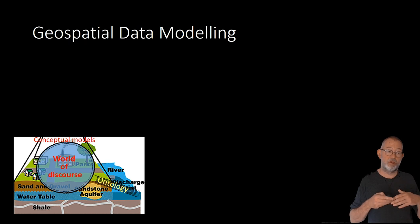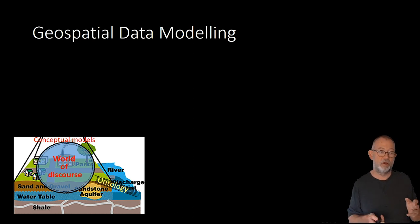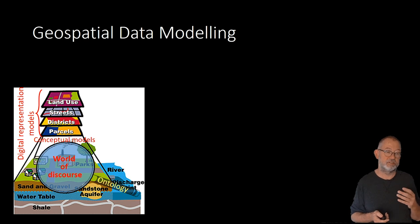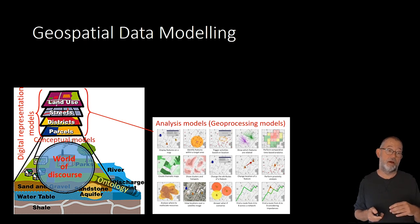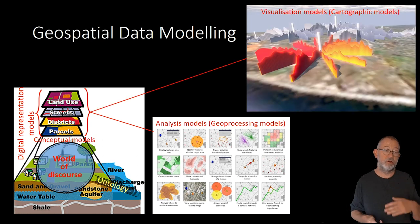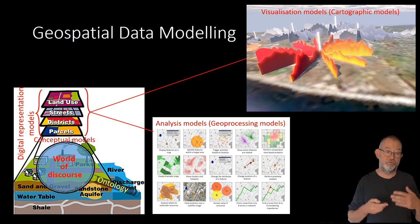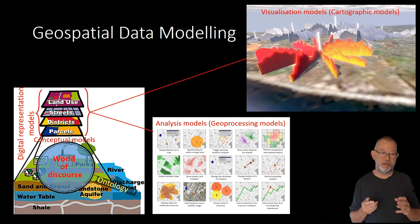Based on the conceptual model, we can make a digital representation. Digital representation itself is seldom a goal, but it is a means for something. So, typically, the means would be to do analysis. So, we will have different analysis models. We can do all of these overlays, or neighborhood, or distance, or all of these different types of analysis that we'll be talking about throughout this series of video lectures, or this course. And we can also do visualization models. So, how we wish to visualize our data in different more or less fancy methods to bring out that information to the reader of our product.